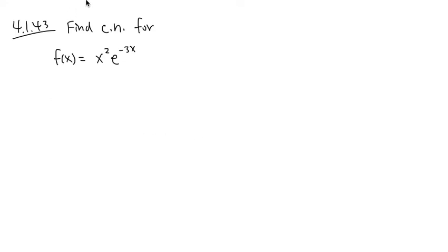For problem 4.1 number 43, we are going to find our critical numbers for the function x squared times e to the negative 3x. So of course, we have to get our derivative first. So let's do it.